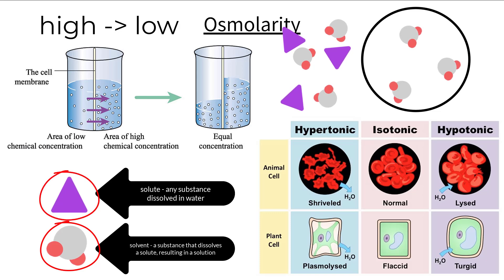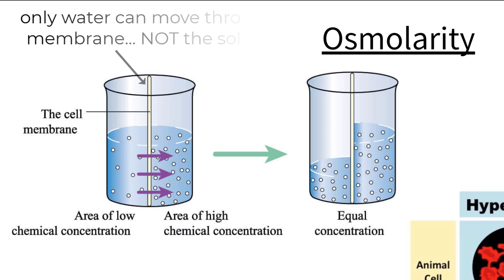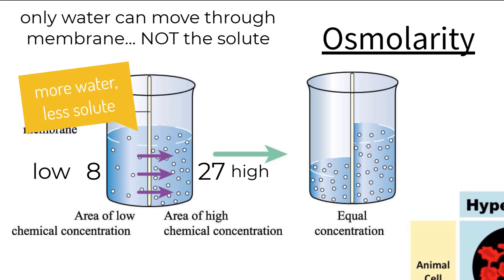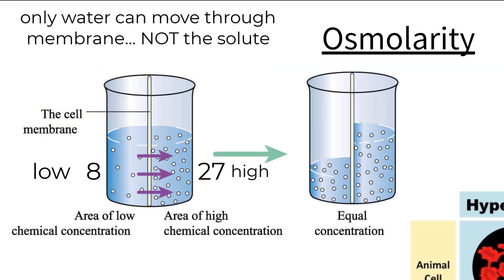We can compare the amount of water molecules, or solvent, in a given area to the amount of solute. Let's say we have a membrane that water can cross through, but sugar cannot. Let's count particles and say we have 8 sugar molecules on one side and 27 on the other — a low concentration of solute here and a high concentration there. Because there are fewer sugar molecules on the left, there would be more water molecules needed to fill the solution to the same volume. On the right, we would have fewer water molecules because some space is taken up by the sugar. If we let this sit, water will move from low concentration to high concentration, diffusing until there is an equal amount of water between all sugar molecules on both sides.